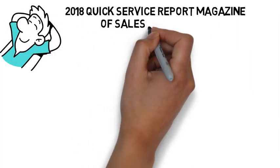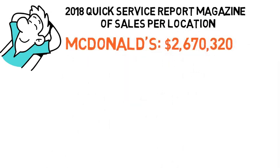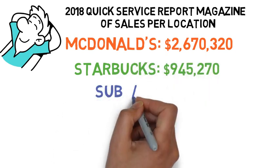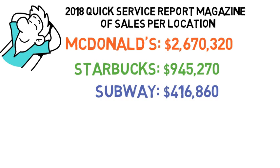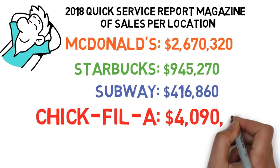Let's look at the sales of some of the world's largest food chains. McDonald's over $2.6 million per unit, Starbucks over $900,000, Subway over $400,000, but Chick-fil-A over $4 million worth of sales per unit.